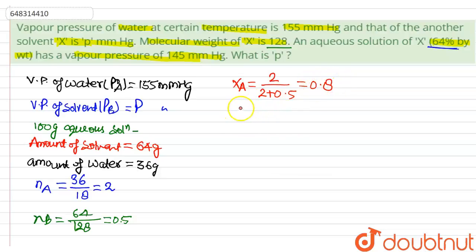And XB is, because XA plus XB equals 1, so XB is 0.2.